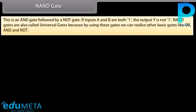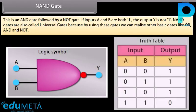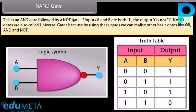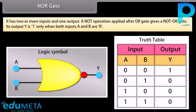NAND gate: this is an AND gate followed by a NOT gate. If inputs A and B are both 1, the output Y is NOT 1. NAND gates are also called universal gates because using them, we can realize other basic gates like OR, AND, and NOT. NOR gate: it has two or more inputs and one output. A NOT operation applied after an OR gate gives a NOR gate. Its output Y is 1 only when both inputs A and B are 0.